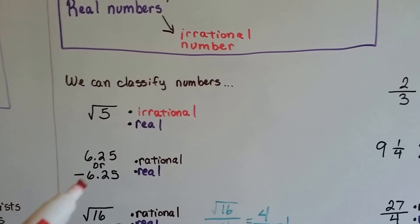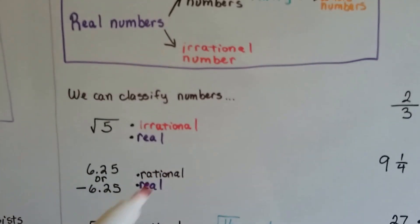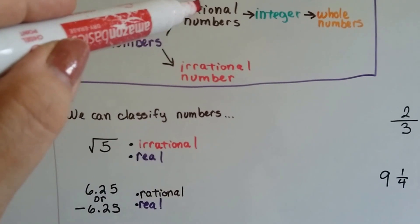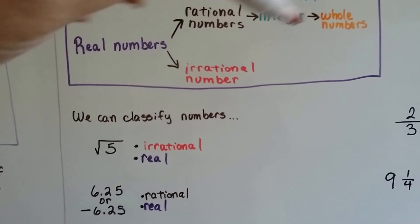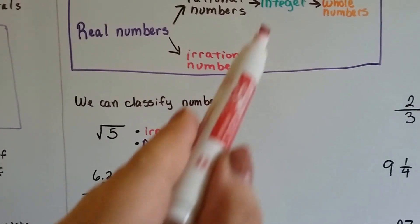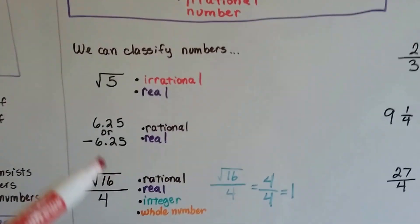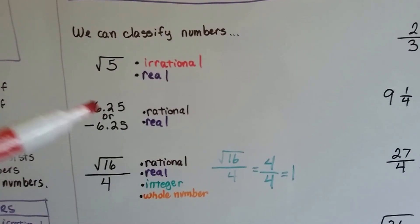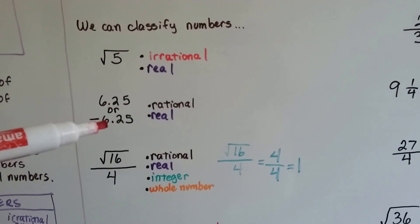6.25 or a negative 6.25, those are rational numbers and they're real. See, they're not whole numbers. And because it's a decimal, it's not an integer. It's got to be a counting number to be an integer. So, they're rational and real, whether they're positive or negative.